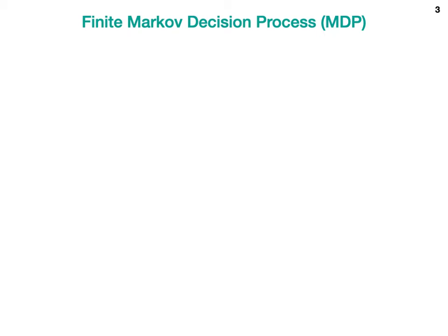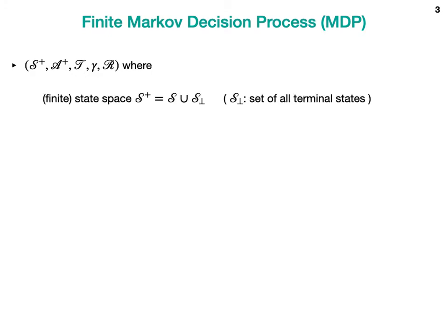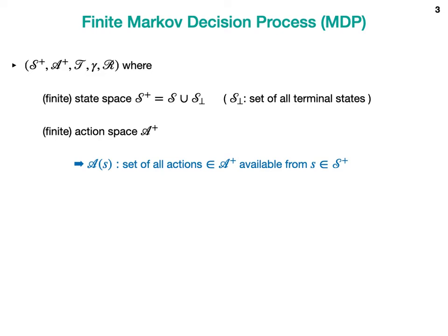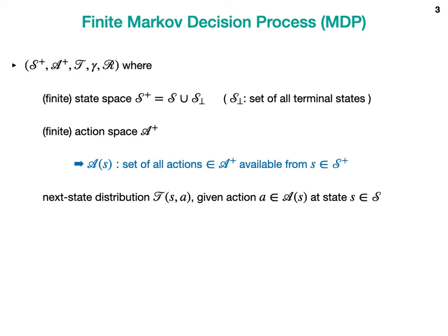Let me first introduce the underlying finite Markov decision process, defined by a tuple where S-plus is a finite state space consisting of the set of all non-terminal states S and the set of all terminal states S-perpendicular. A is a finite set of all actions, T(s,a) defines the next state's distribution given action A in each non-terminal state, gamma is the discount rate, and the reward model R defines the reward for each transition and at each terminal state-action pair.